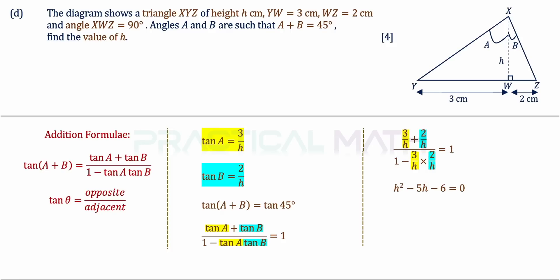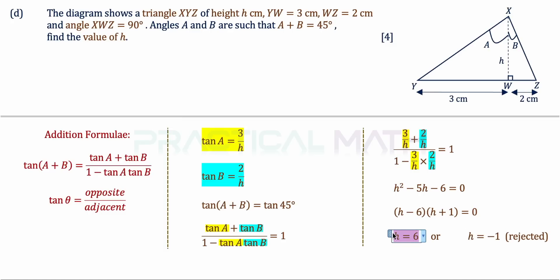Manipulating this equation gives H² minus 5H minus 6 equals 0. Cross-factorizing: (H minus 6)(H + 1) equals 0, so H equals 6 or H equals negative 1. Since H is a length and cannot be negative, the answer for part D is H equals 6.